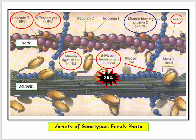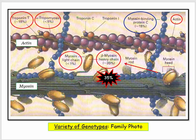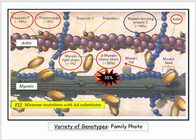This slide shows a non-comprehensive overview of genotypes associated with hypertrophic cardiomyopathy. Note that the beta-myosin heavy chain defect is well represented, accounting for 35% of cases. The majority of cases are missense mutations with single amino acid substitutes. This is not critical for your purposes, but sets you up for the next slide.